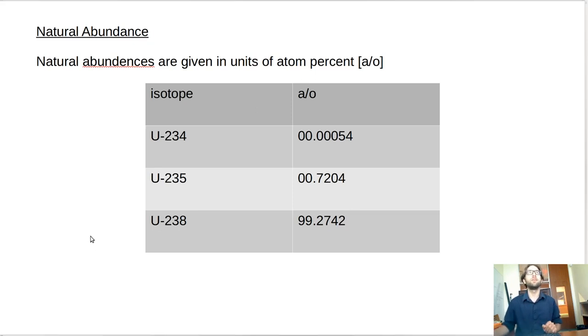And then the other major species is U-238 that exists naturally at 99.2742 percent, atom percent. Pretty good. So every chemical element that is naturally occurring will have some breakdown by isotope.